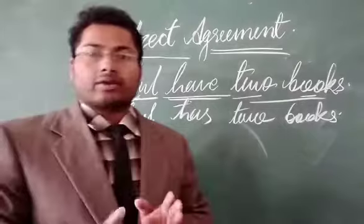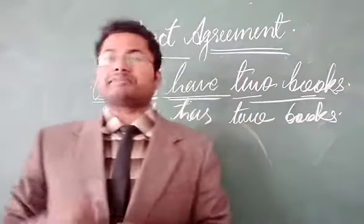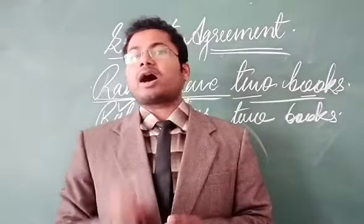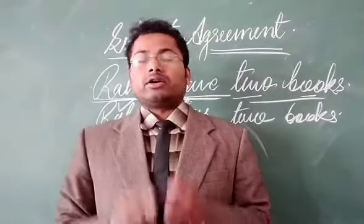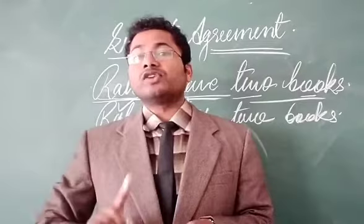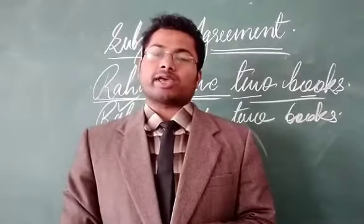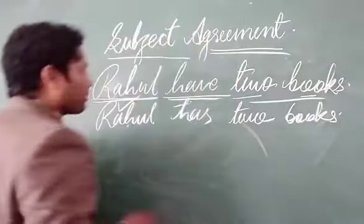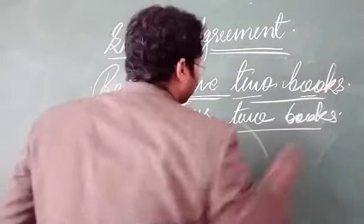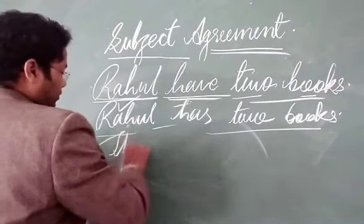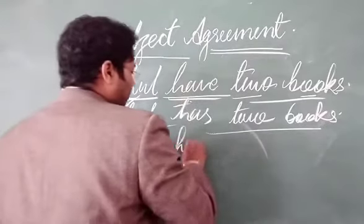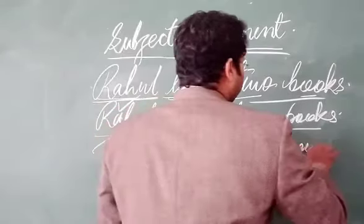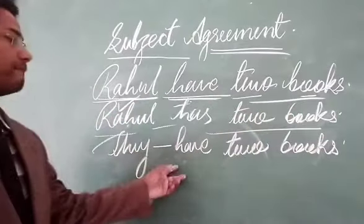If you are well-versed and confident in the topic of subject agreement or verb concord, you can easily find errors in a paragraph or in a line. All errors based on verbs and their forms — you can easily find them in a paragraph. If we write 'they' at the place of 'Rahul,' then it becomes: they have two books.